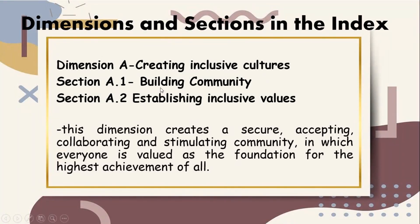Dimension A has section A.1, building community, and section A.2, establishing inclusive values. This dimension creates a secure, accepting, collaborating, and stimulating community in which everyone is valued as the foundation for the highest achievement of all. It develops shared inclusive values that are conveyed to all new staff, students, governors, and parents and carers.